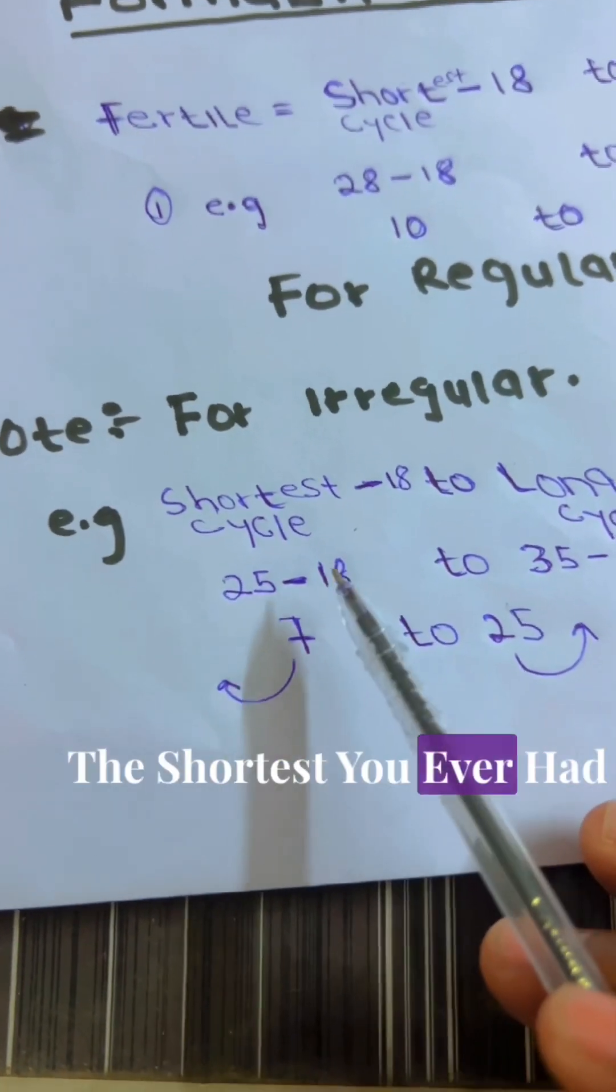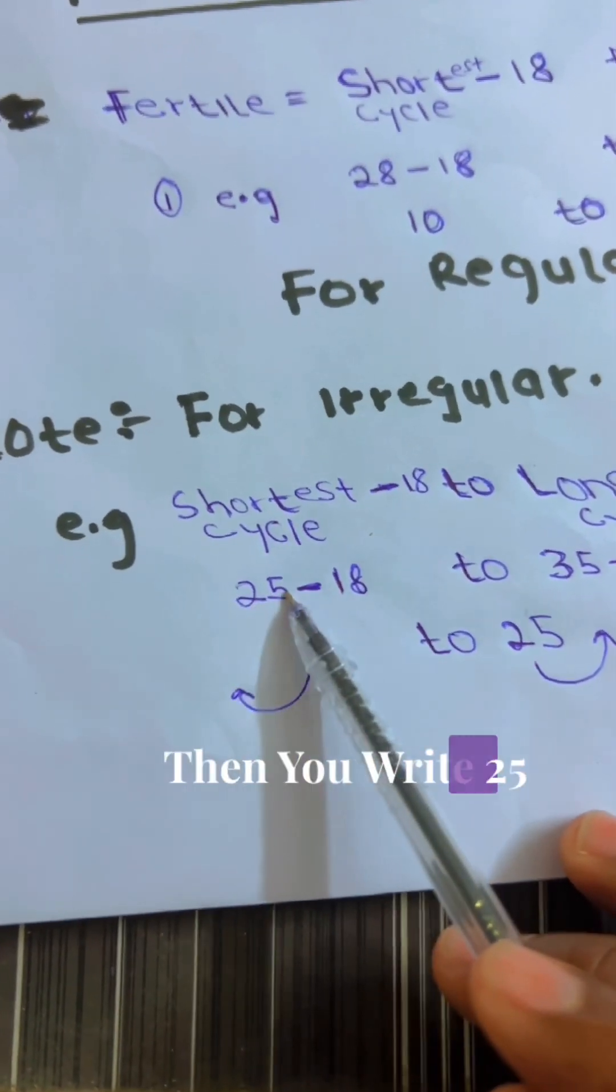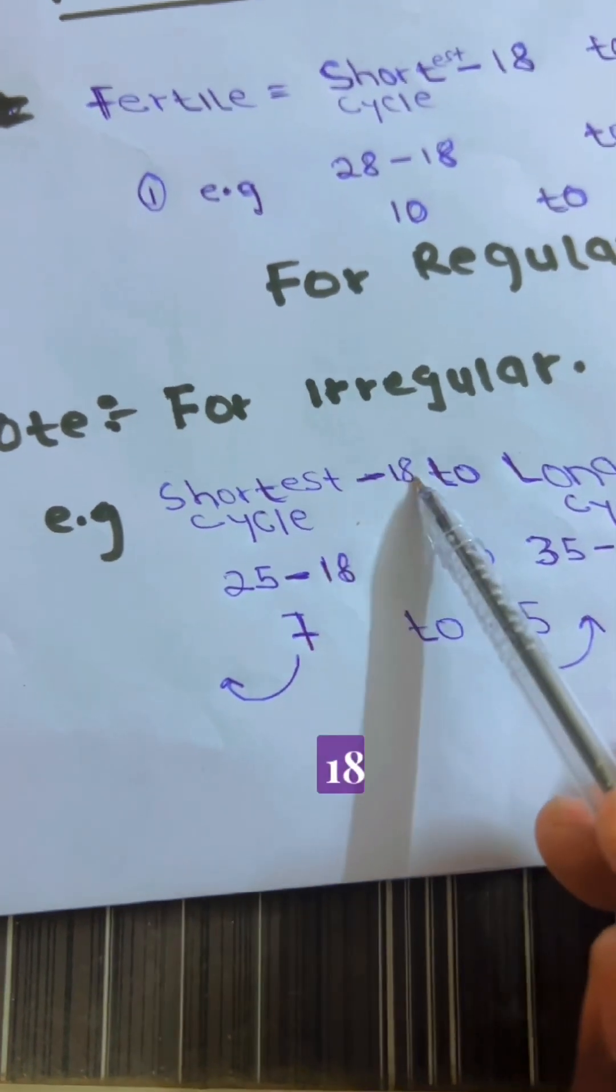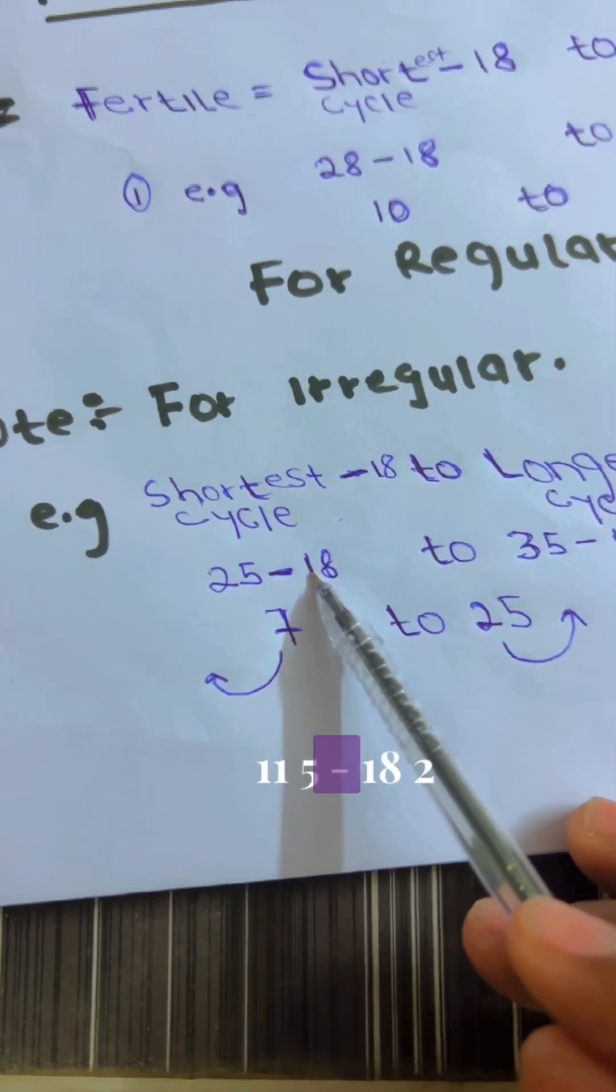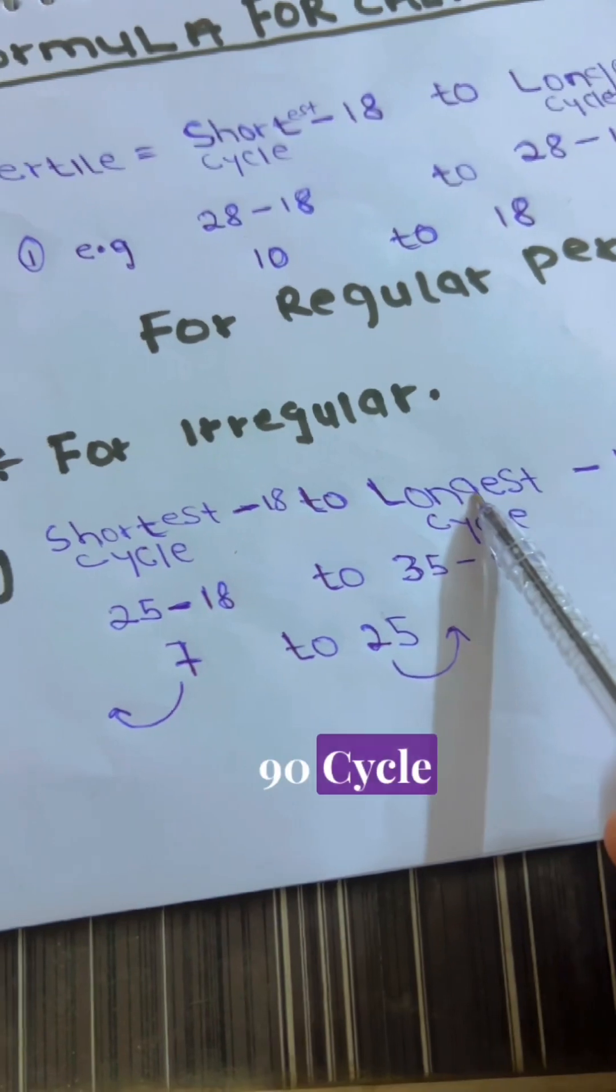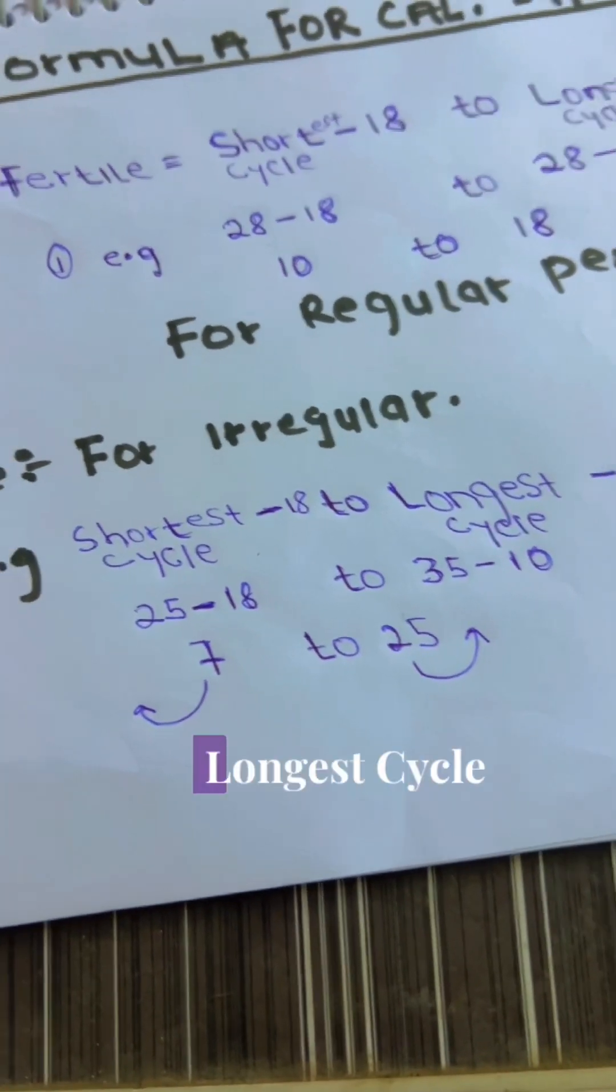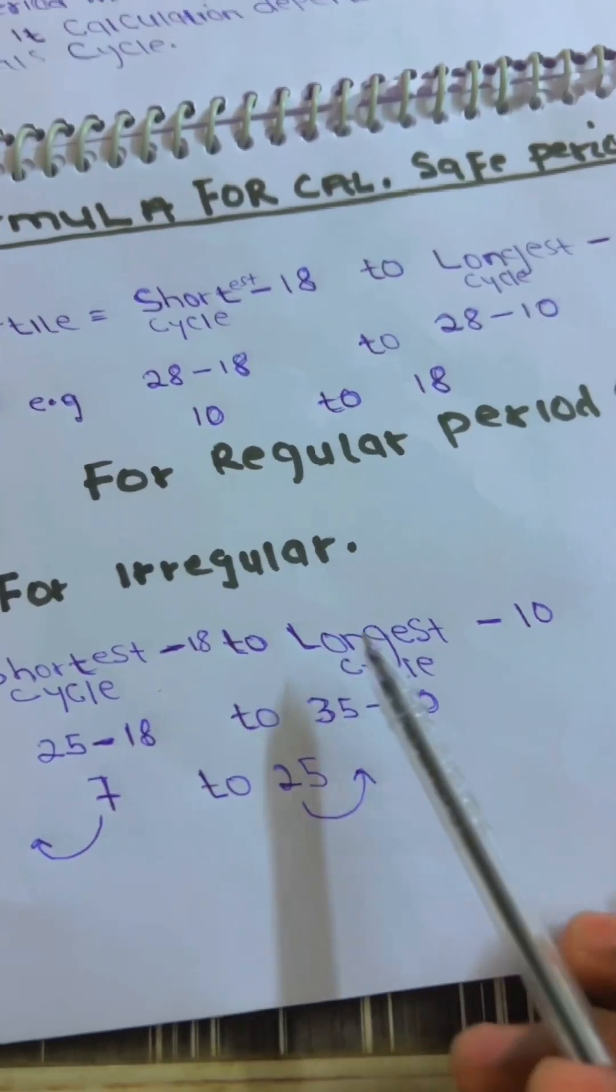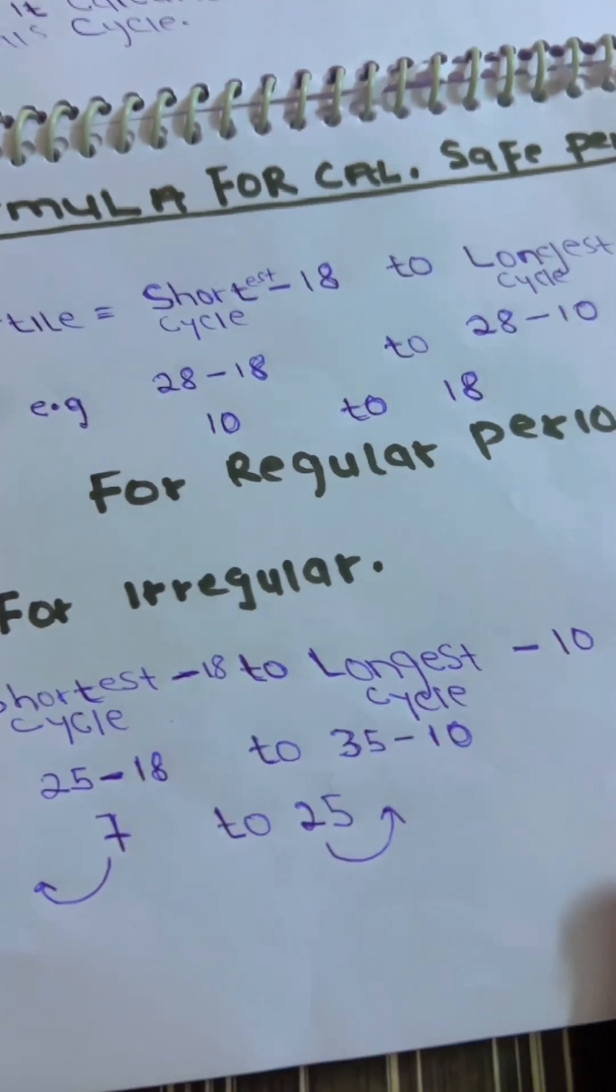the shortest cycle you ever had is 25, then you write 25, minus 18, you write 25 minus 18, to the longest cycle. So, you think about the longest cycle you ever had.